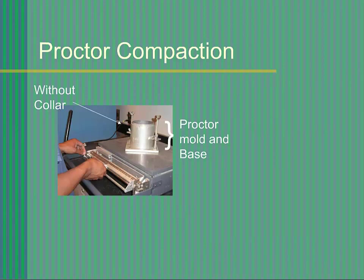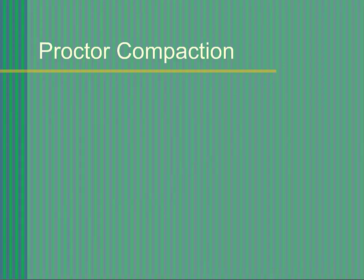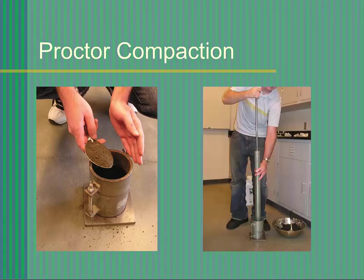Obtain the combined weight of the Proctor mold and its base. Assemble the Proctor mold onto the base and attach the collar — remember, do not include the collar in the assembly weight. Now compact the soil into the mold in five equal layers, with each layer receiving 25 blows of the hammer. Place some of the prepared soil into the cylindrical steel mold until it is about one-third full, then compact the soil by applying 25 blows of the modified Proctor hammer, distributing the blows across the top of the soil. Continue this process until five layers have been placed and compacted. You may need to adjust the quantity of soil in each layer to ensure the mold is neither over- nor underfilled after the last layer.